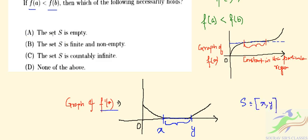So if we check the options: the set is empty - next, option B, the set is empty is incorrect. So in option B it is given the set is finite and non-empty. So it is non-empty, that is fine, but whether it is finite or non-finite we cannot tell from this x and y basis. And C is also incorrect - the set S is countably infinite.